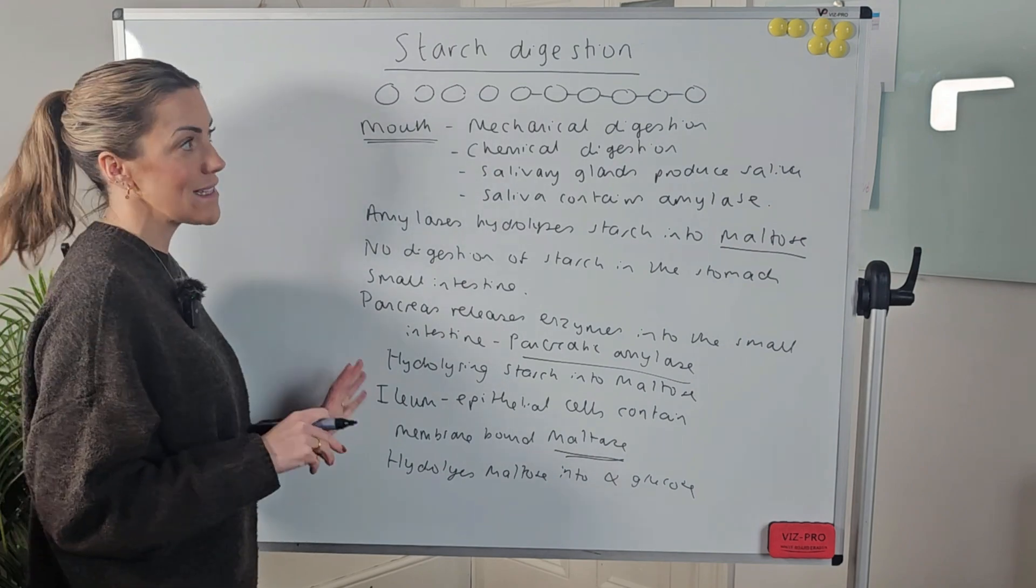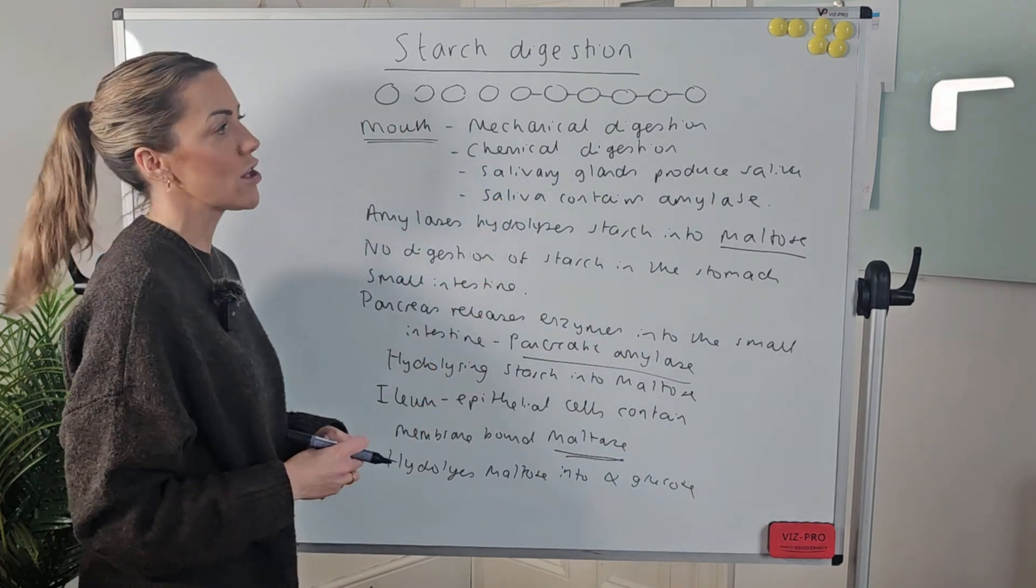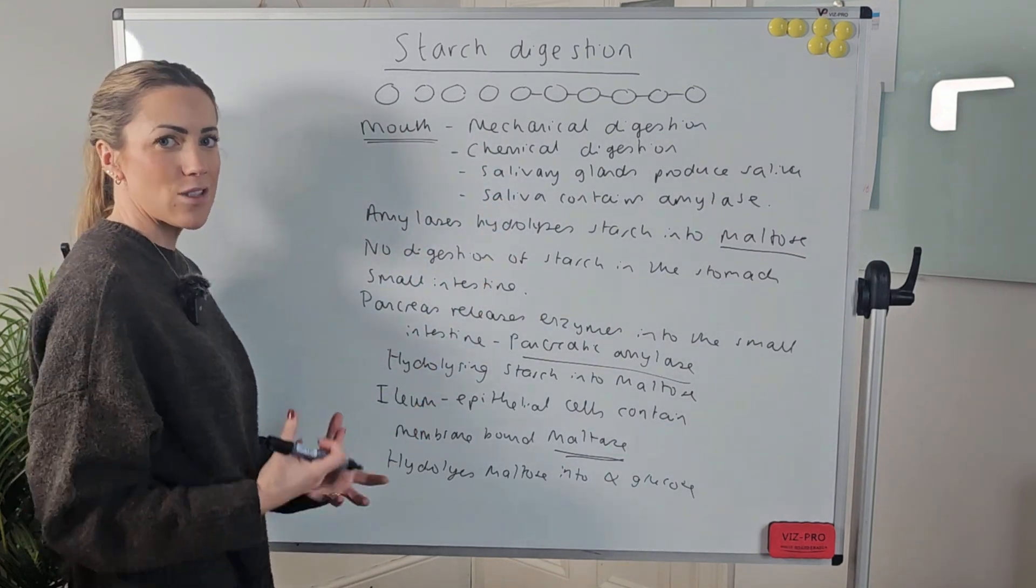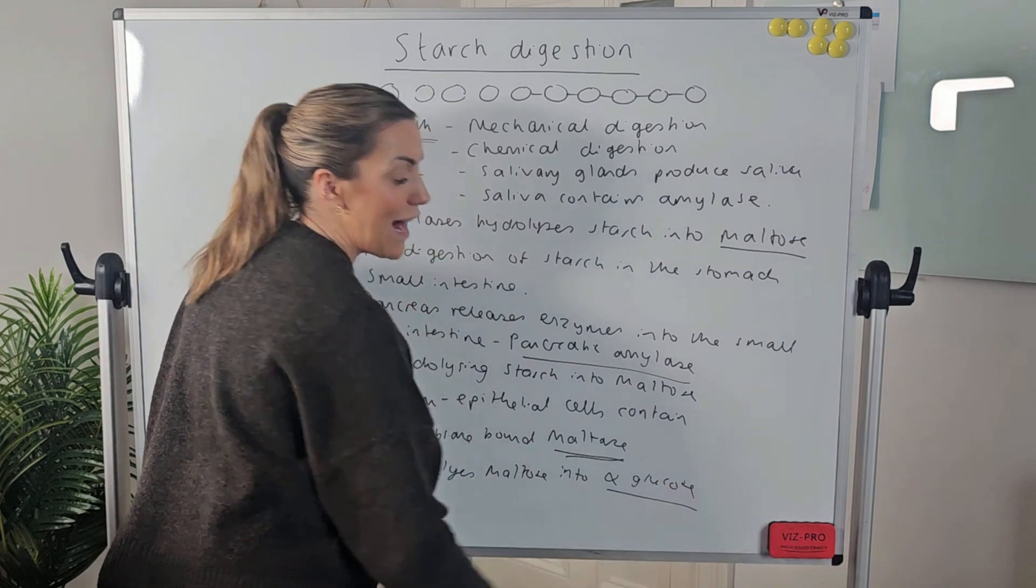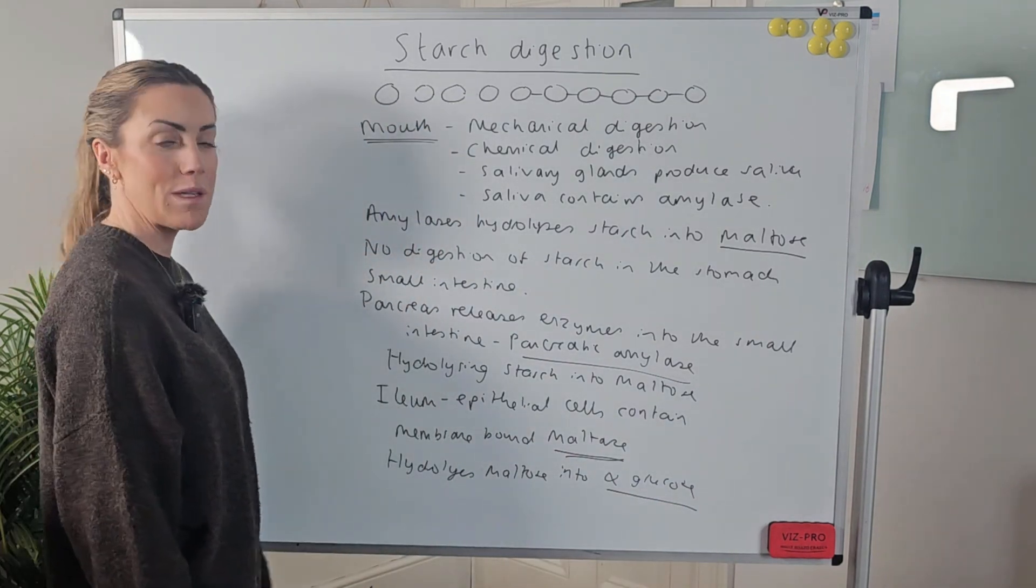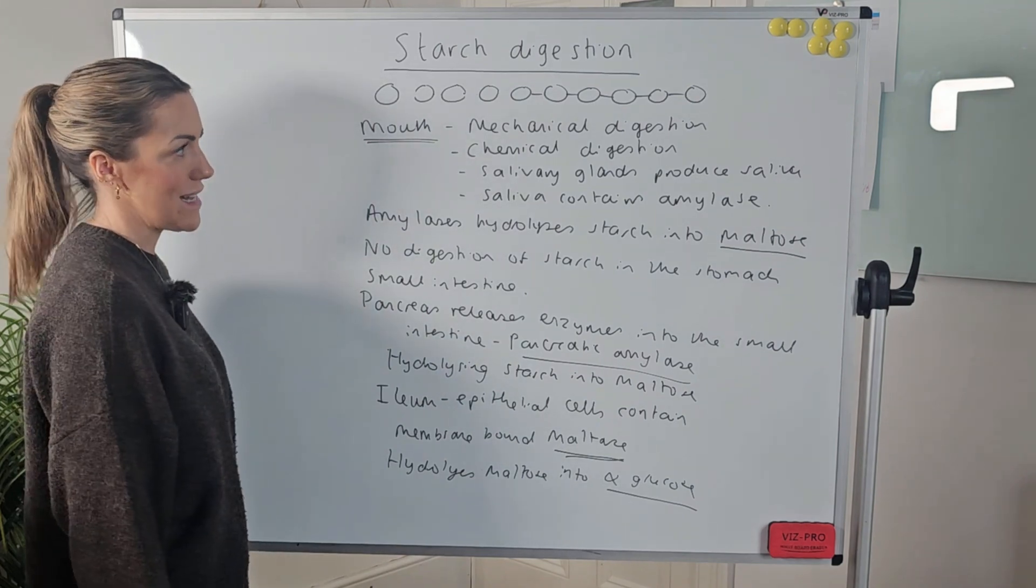It can be absorbed through the wall of our small intestine into our bloodstream using that co-transport mechanism that we've talked about before. The whole point of this is to take large insoluble molecules of starch and digest or hydrolyze them into small soluble alpha glucose so it can be absorbed into our blood and delivered to all of our body cells.